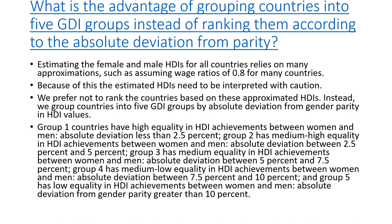An important question is why countries are grouped into 5 GDI groups rather than ranked by absolute deviation from parity. Estimating male-female HDI relies on many approximations and calculations, such as assuming a wage ratio of 0.8 for many countries. Because of these approximations, the estimated HDI values need to be interpreted with caution, and economists prefer grouping countries rather than ranking them.